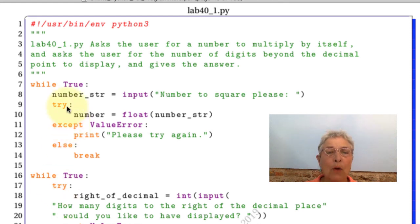Okay, while true we're asking for a number to square, we make a float out of it if we can, otherwise we say please try again, and the else is the break, meaning that we're fine.